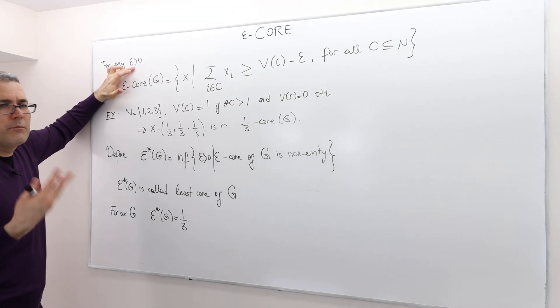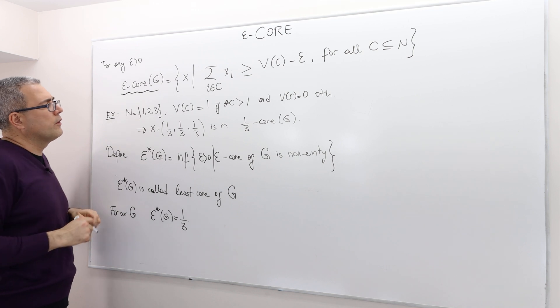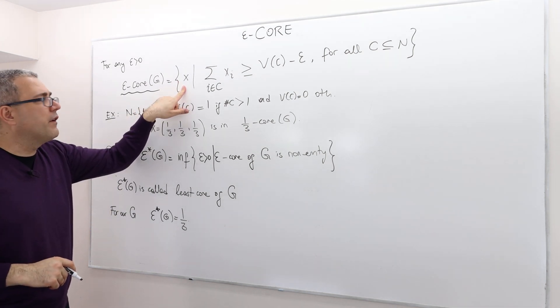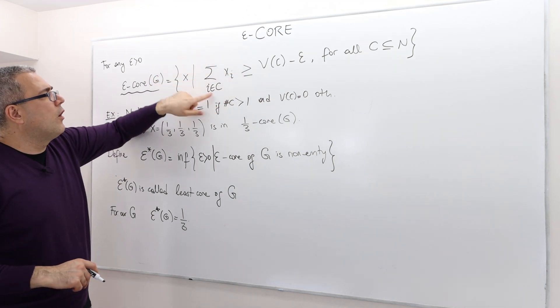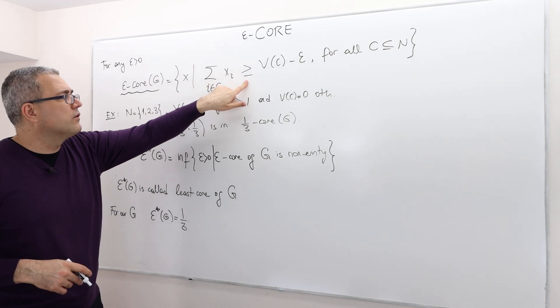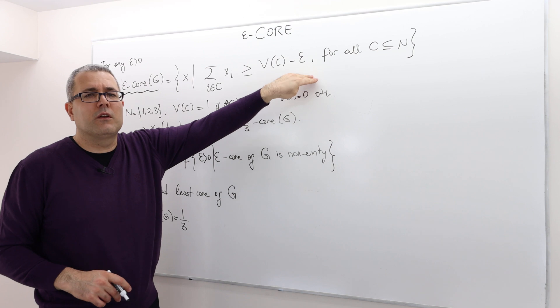So how do we formally define it? For any Epsilon, some positive number, we define the concept Epsilon Core of game G as the set of payoff vectors, where the total sum of the payoff of coalition C is greater than or equal to the worth of coalition C minus Epsilon.